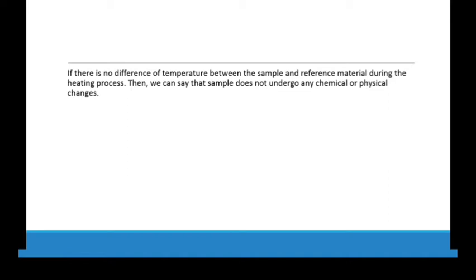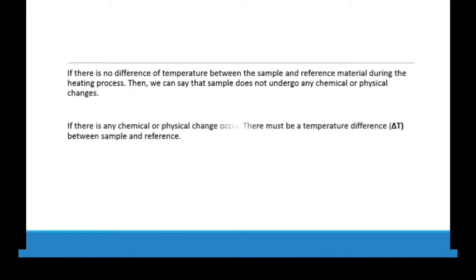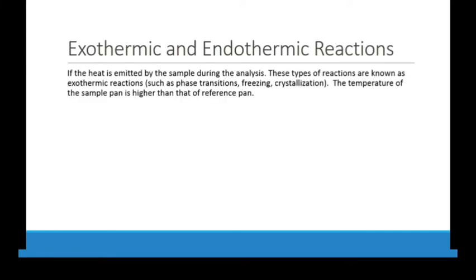For example, if you have a beaker with an exothermic reaction going on, you feel that the beaker is hot. But if there is an endothermic reaction inside the beaker, it takes heat from the environment and you feel that the beaker is cold. It is the same case in DTA: if your sample has some exothermic properties, there will be an increase in temperature; if there is an endothermic process, there will be a decrease in temperature. Any chemical or physical change must produce a temperature difference between sample and reference.